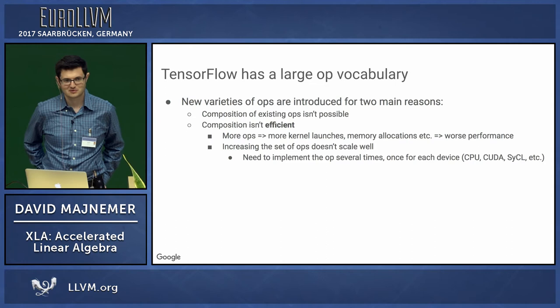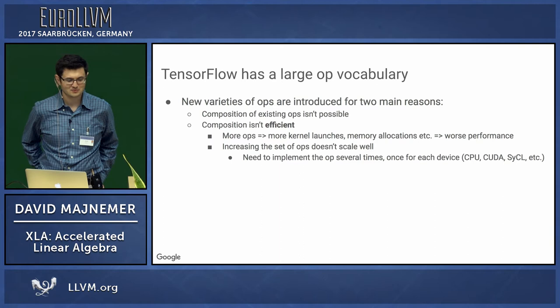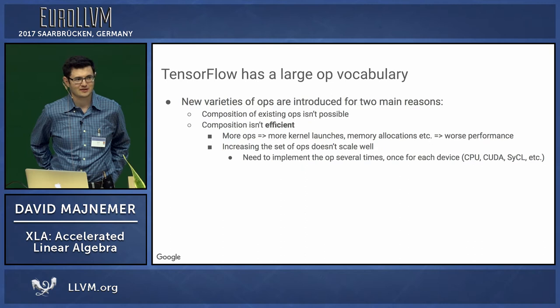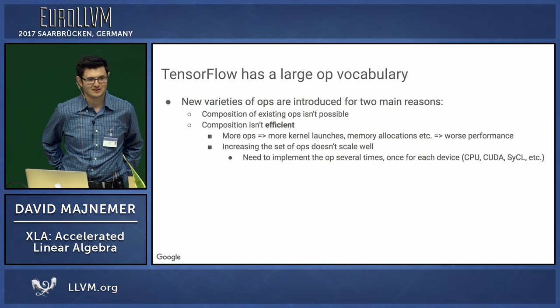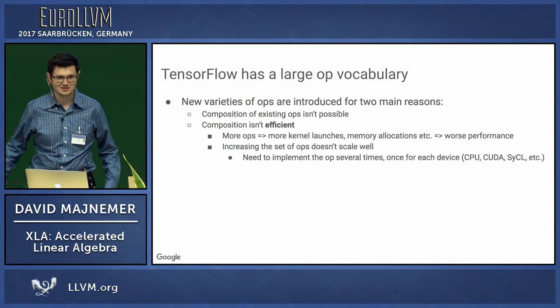From the compiler community, we learned this lesson: we don't implement Clang's code generation separately for each target. We don't have a separate PowerPC IR gen for Clang — we have IR gen, and we let LLVM take care of the lowering.